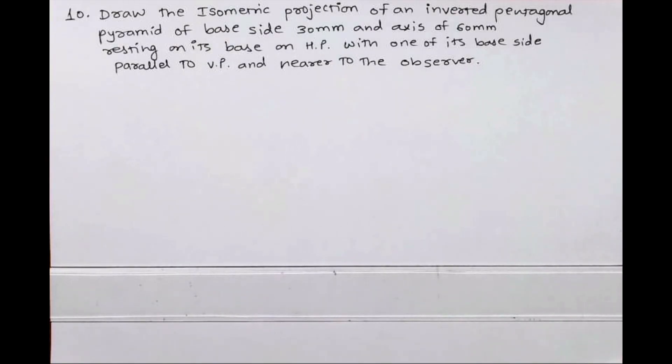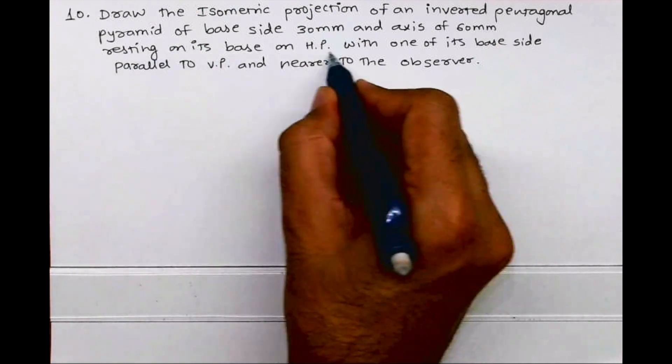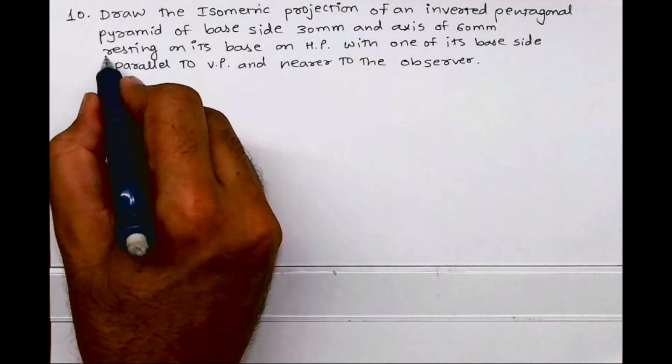Welcome to technical drawing. Today we'll see how to draw the isometric projection of an inverted pentagonal pyramid of base side 30mm and axis height 60mm. It's resting on its base on HP.